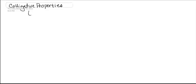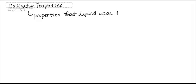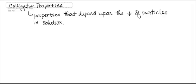Hi guys. We just finished dealing with different units of concentration, and now we're going to put those units of concentration to work by taking a look at colligative properties. And colligative properties are, by definition, properties that depend upon the number of particles in the solution. We have four major colligative properties that we're going to deal with.